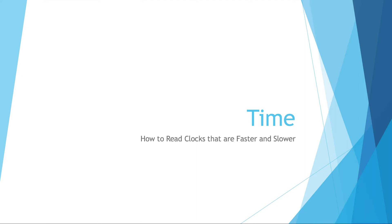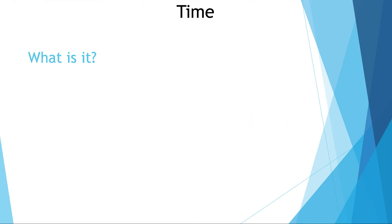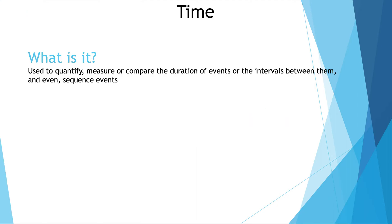How to read clocks that are faster and slower. Time is a quantified measure used to compare the duration of events or the intervals between them, and even to sequence events.